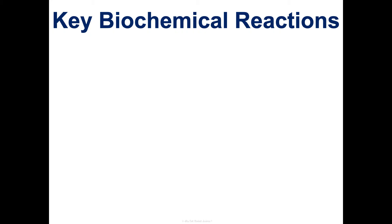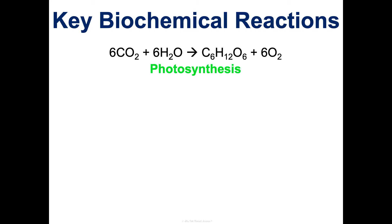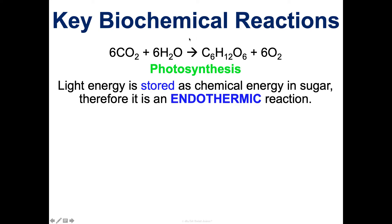Photosynthesis and cellular respiration are two critical biochemical reactions we'll spend most of this unit discussing. The first — photosynthesis — you need to memorize this: six CO₂ plus six H₂O, using light energy, yields one glucose (C₆H₁₂O₆) and six oxygen molecules. Light energy gets stored from the sun as chemical energy in the form of sugar. C₆H₁₂O₆ is glucose. Overall, it's an endothermic reaction because we're absorbing more energy than is being released as the products are formed.